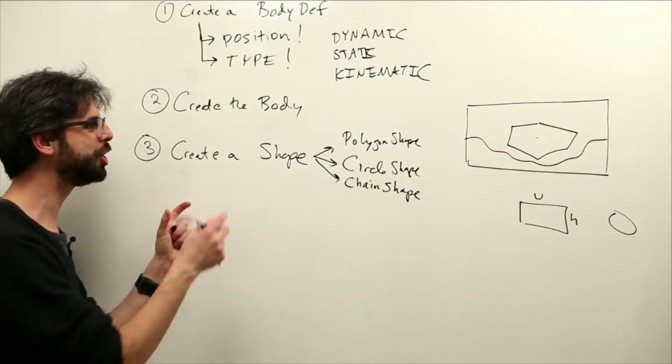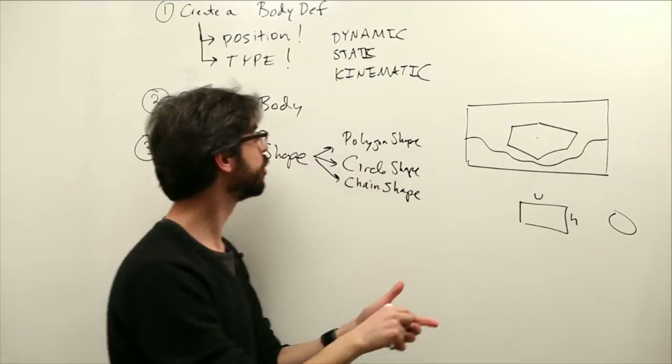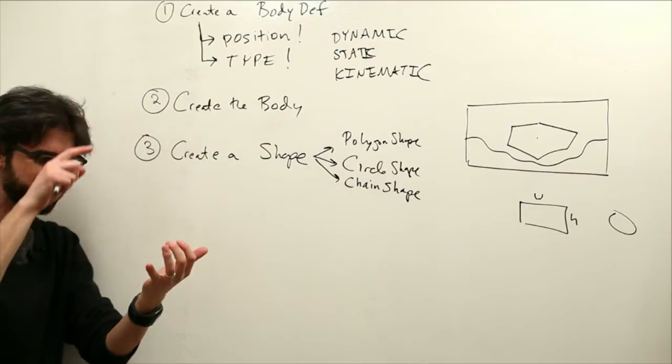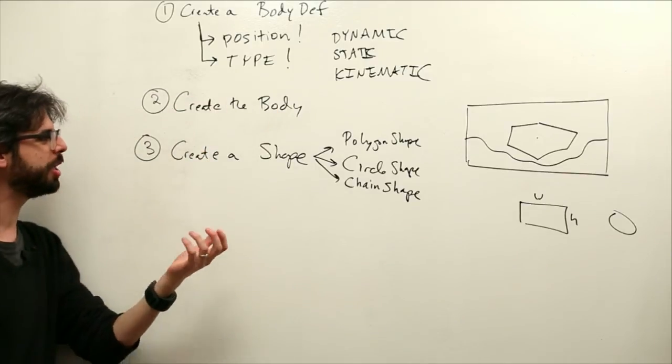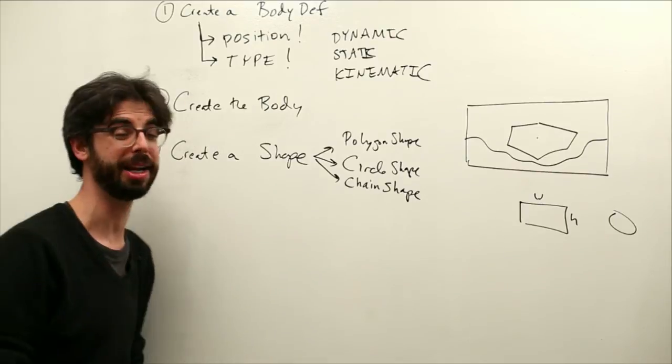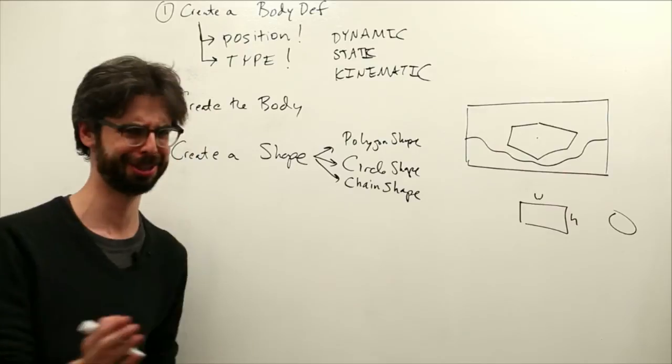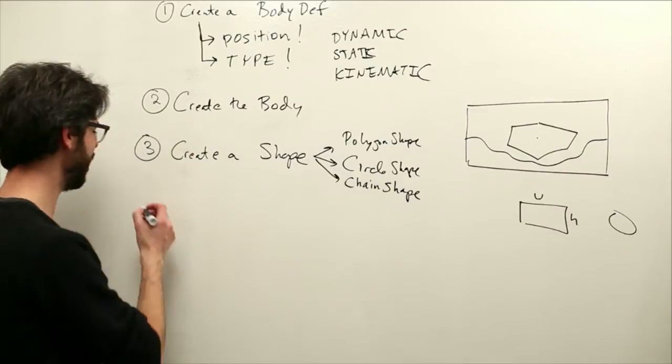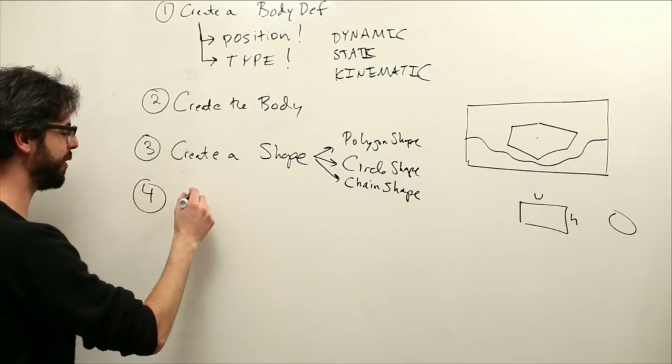And once we create that and define that shape, what needs to happen is that shape needs to be attached to the body. So the body experiences the physics. Location, velocity, acceleration. It gets forces applied to it. The shape is the geometry attached to that body. The way we attach a shape to a body, I know this is super exciting, right, is a fixture.